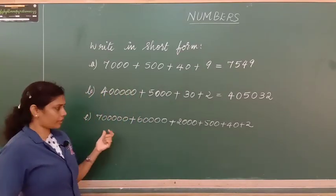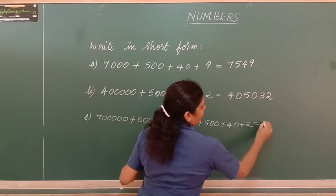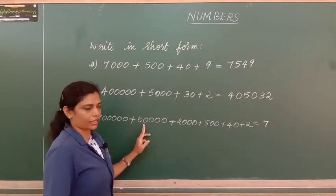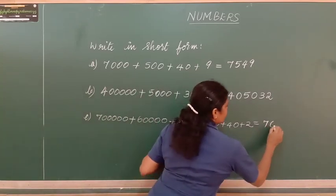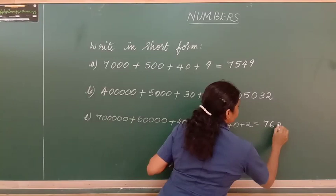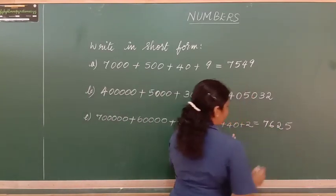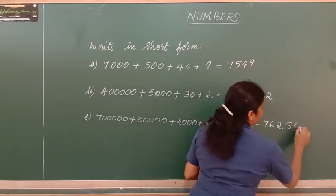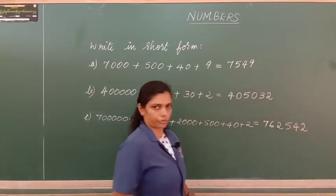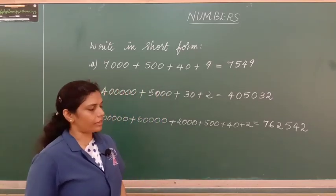In the last problem we have 7 lakh + 60,000 + 2,000 + 500 + 40 + 2. So in lakhs place we write 7, in ten thousands we write 6, thousands we write 2, hundreds we write 5, tens we write 4, and ones we write 2. So it is 7,62,542. We should not forget to put zeros in places where nothing is mentioned.